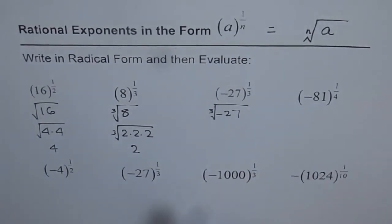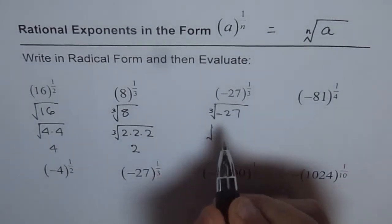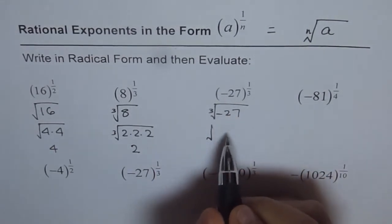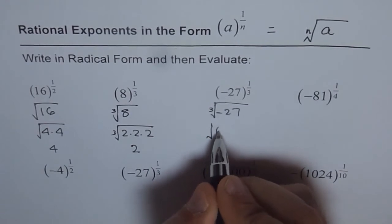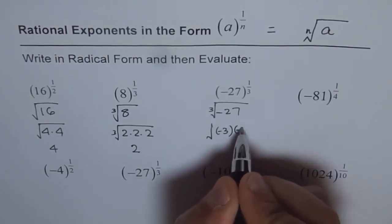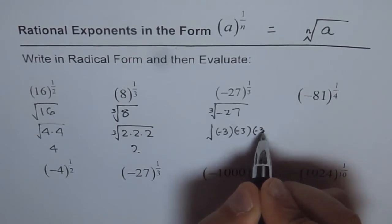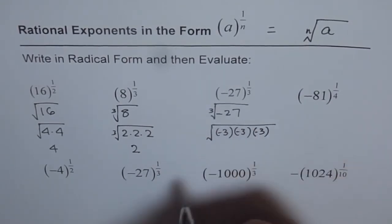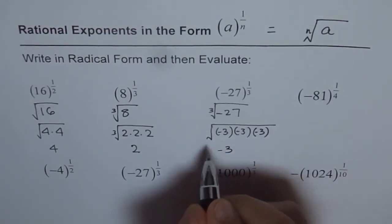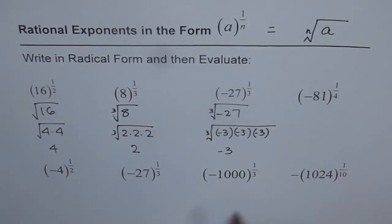Now, the number which should be multiplied 3 times by itself to give you minus 27 is minus 3. If you do minus 3 times minus 3, you get plus 9, times minus 3 will give you minus 27. Therefore, the answer for this is minus 3. The cube root of minus 27 is minus 3.